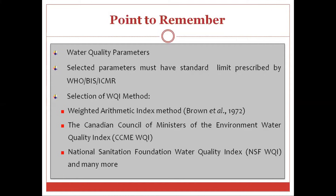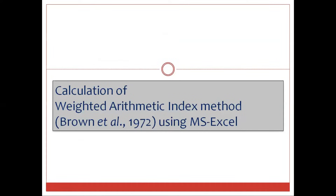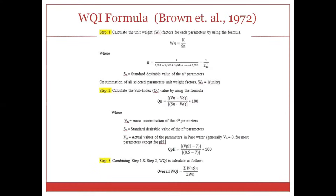The next important point is that you have to choose which water quality index method to use, because there are various types. The most commonly used are the weighted arithmetic index method developed by Brown et al., the Canadian Council of Ministers of the Environment index, and the National Sanitation Foundation water quality index. In this video, I'm going to show you how to calculate the overall water quality index using the weighted arithmetic index method developed by Brown et al.